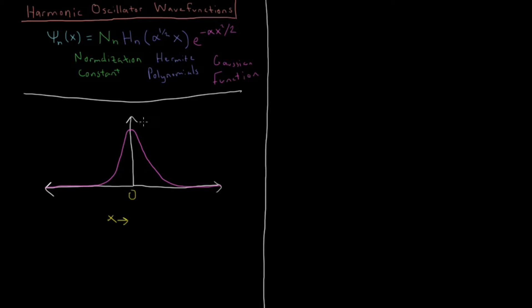And this would be the case if we had some large value for alpha. If we have some smaller value for alpha, then it's going to rise slowly and decay slowly. So this would be a small value for alpha.